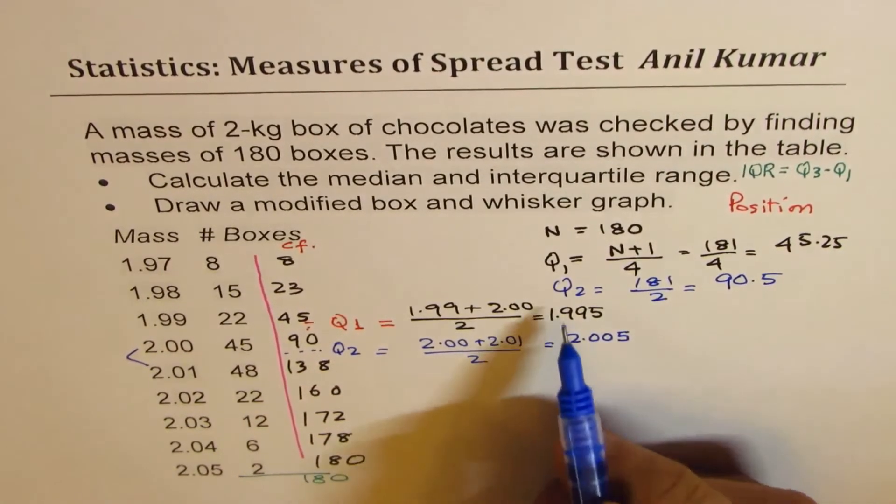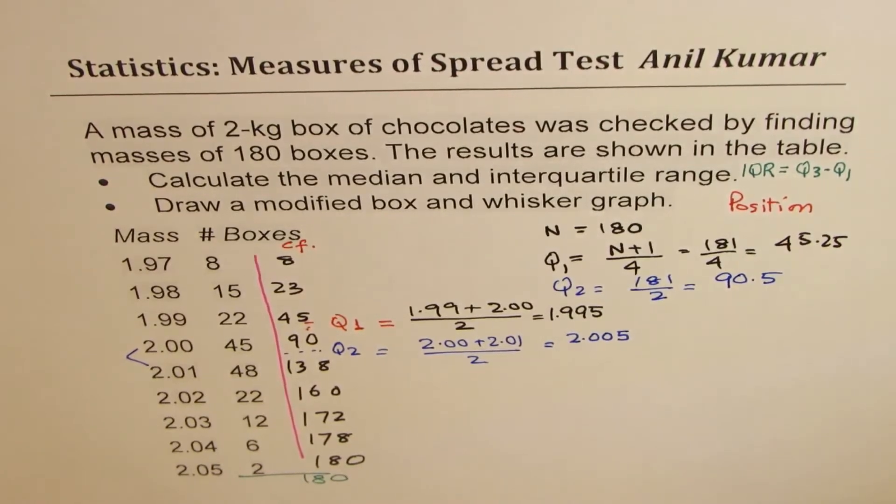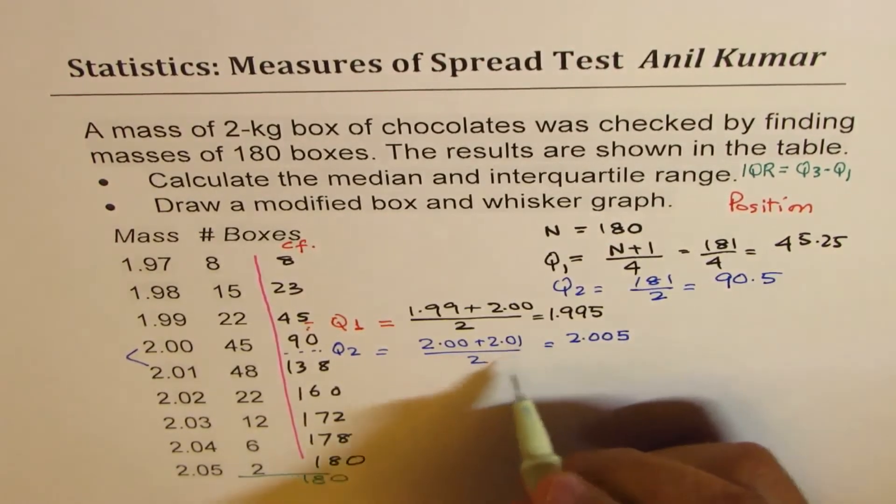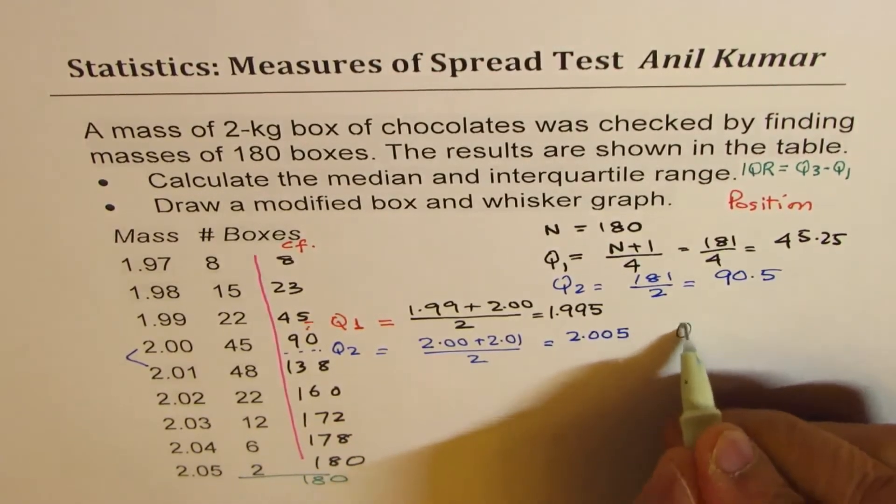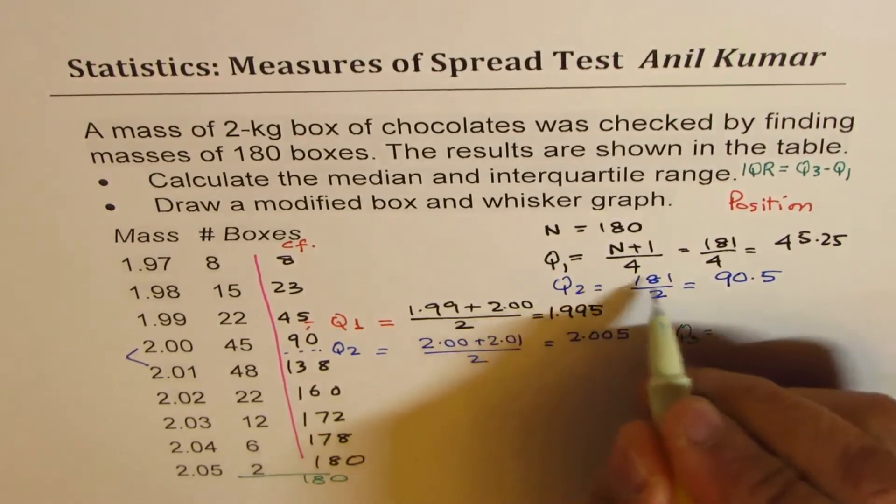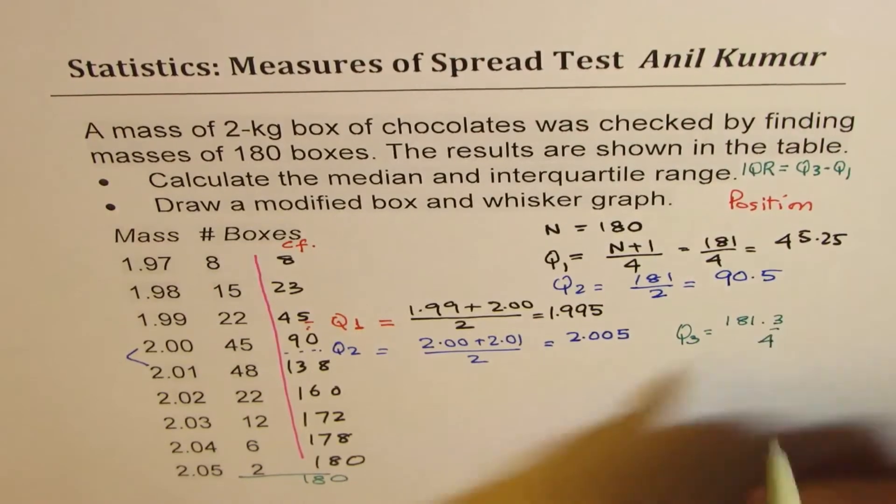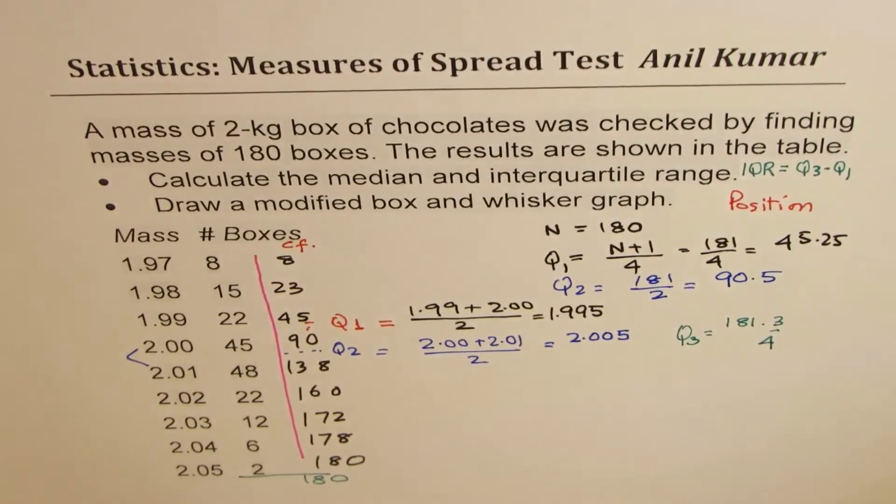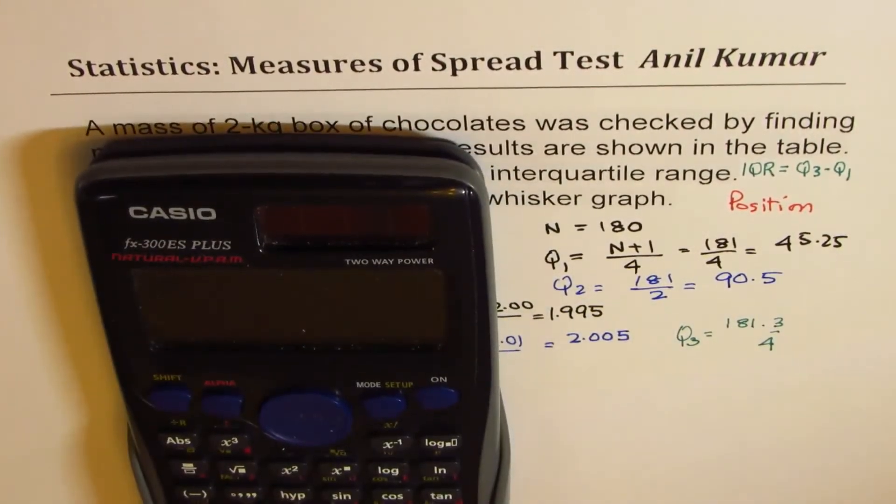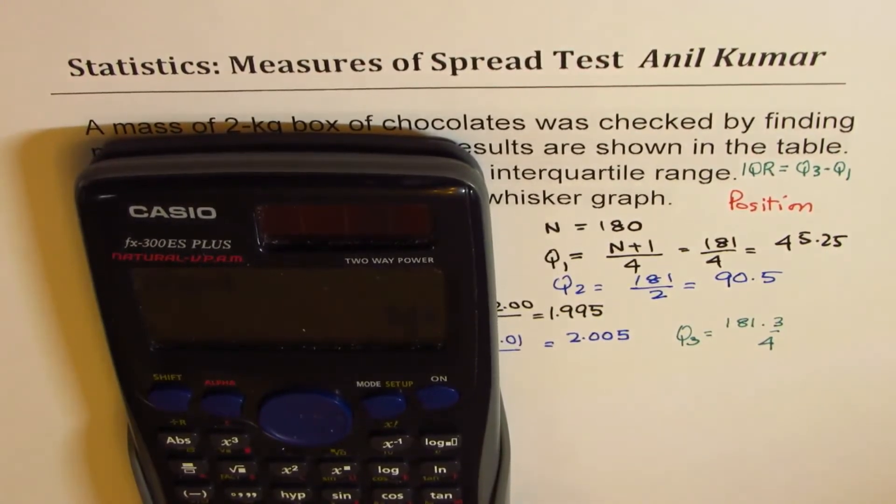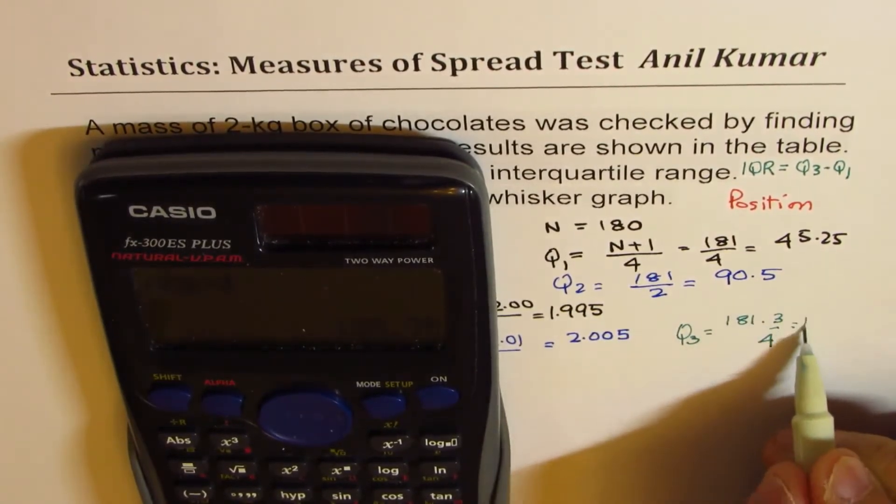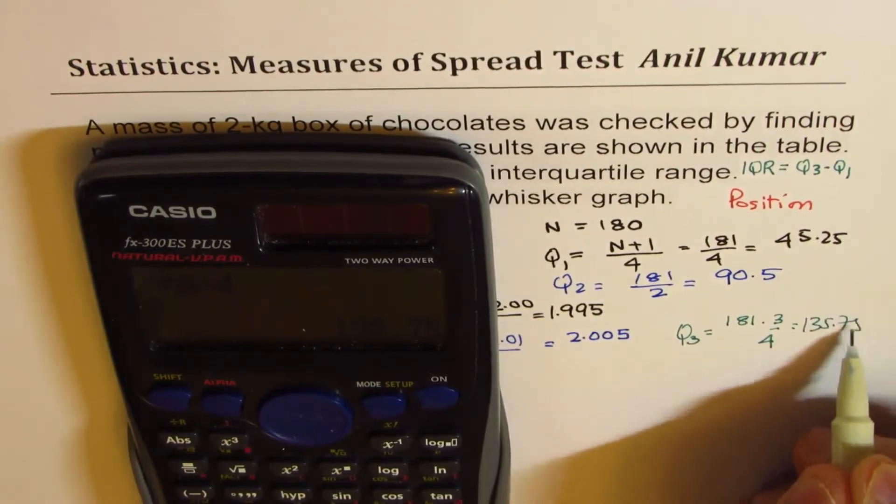Now let's find Q3. We'll do the calculation again. Q3 will be 181 times 3 over 4, third quartile. So 181 times 3 divided by 4 in decimals gives us 135.75.